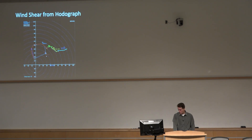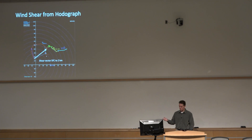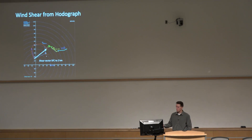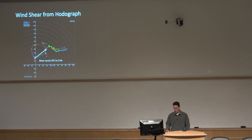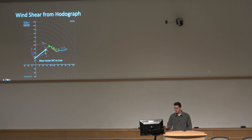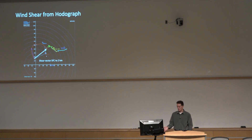Vertical shear is inherently what the hodograph tells you, because this is essentially a bunch of shear vectors is what it really represents. So from a hodograph, if you want the surface-to-two-kilometer above ground level shear, you just draw the vector between those two points. If you take the length of this vector, that looks like about 50 knots — so there's about 50 knots of bulk wind shear in the lowest two kilometers.